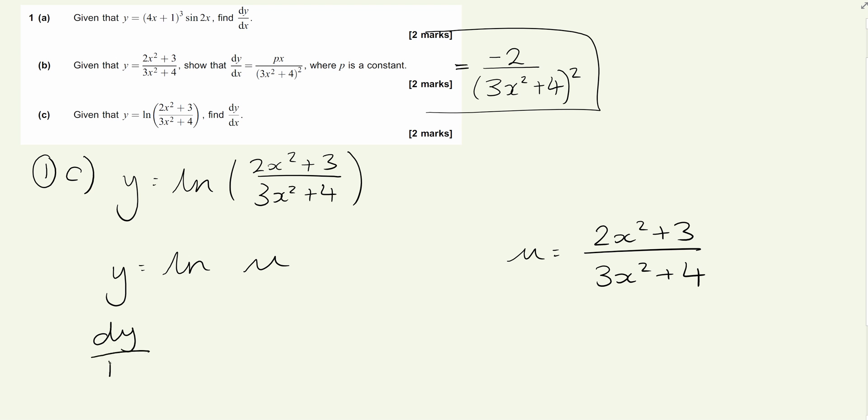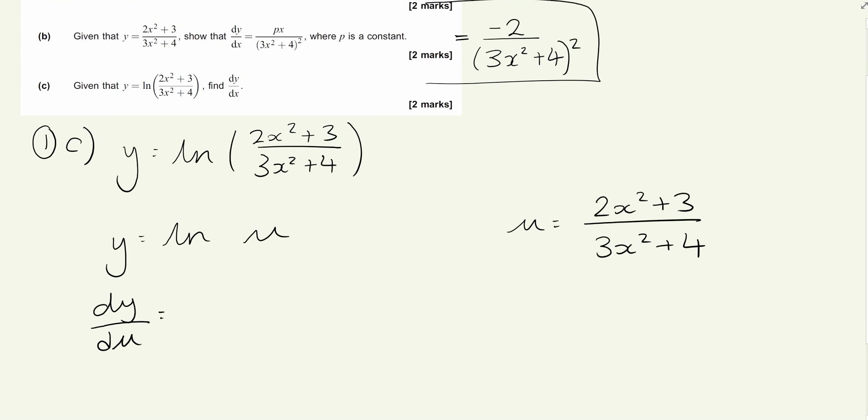We need to do chain rule again. We're going to say y equals ln(u), where u equals (2x² + 3)/(3x² + 4). The differential of y, we're differentiating ln(u), ln(u) is going to be 1/u. We're differentiating u here now, and we've done that in the previous question. That comes to -2/(3x² + 4)².